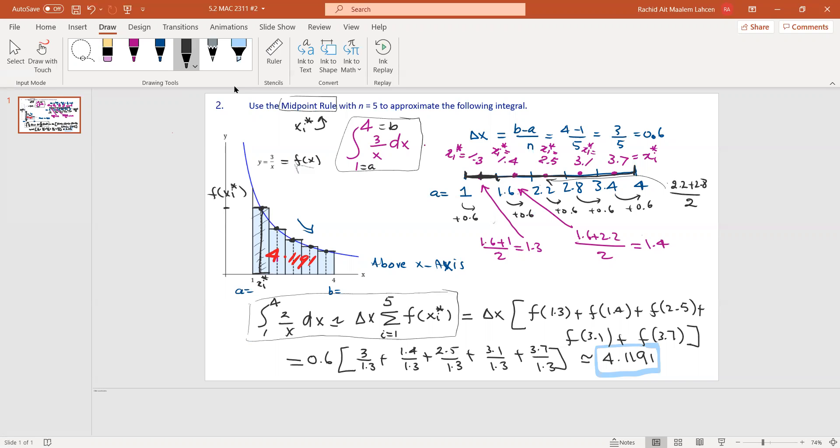Now we have the xi's. Remember, f(xi), where f(x) is 3 over x. We have f of the first midpoint, which we can call x1*, x2*, x3*, x4*, x5*. Now we're going to substitute 1.3 into the function f(x), and that will give us the first one.